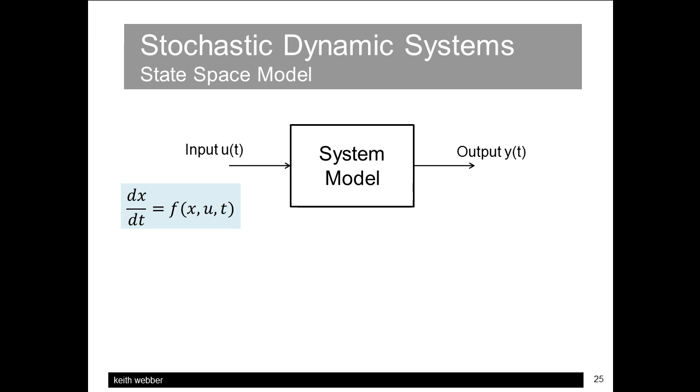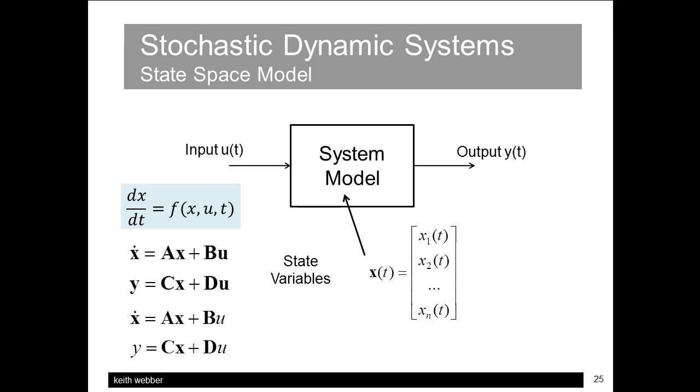The state-space representation is formed by choosing appropriate internal state variables and rearranging the system equations as a set of first-order equations in these variables. Linear time invariant, or LTI, systems can be represented as a set of equations as shown here, where the system matrix A, input matrix B, output matrix C and D have constant terms. For a single input-single output system, like the transfer function case, B is a column vector and C a row vector.